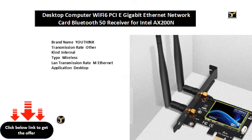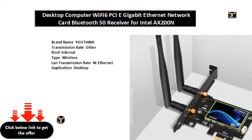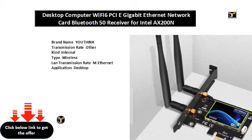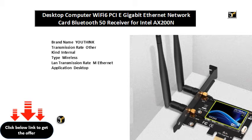Brand name: Youthink. Transmission rate: other. Kind: internal. Type: wireless LAN. Transmission rate: M Ethernet. Application: desktop. Adapter socket: PCIe. Interface type: PCI Express. Wi-Fi supported frequency: 2.4G and 5G. Applicable network type: Gigabit Ethernet. Model number: dual frequency network card.